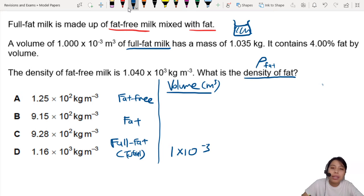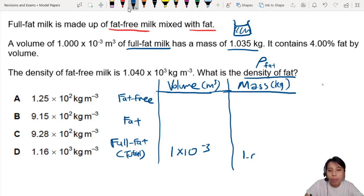Okay, so that's the thing that's given to us. What else do we know? Mass of 1.035 kg. So let's write that mass in kg. Extend the table a bit. So this is 1.035. Very nice.